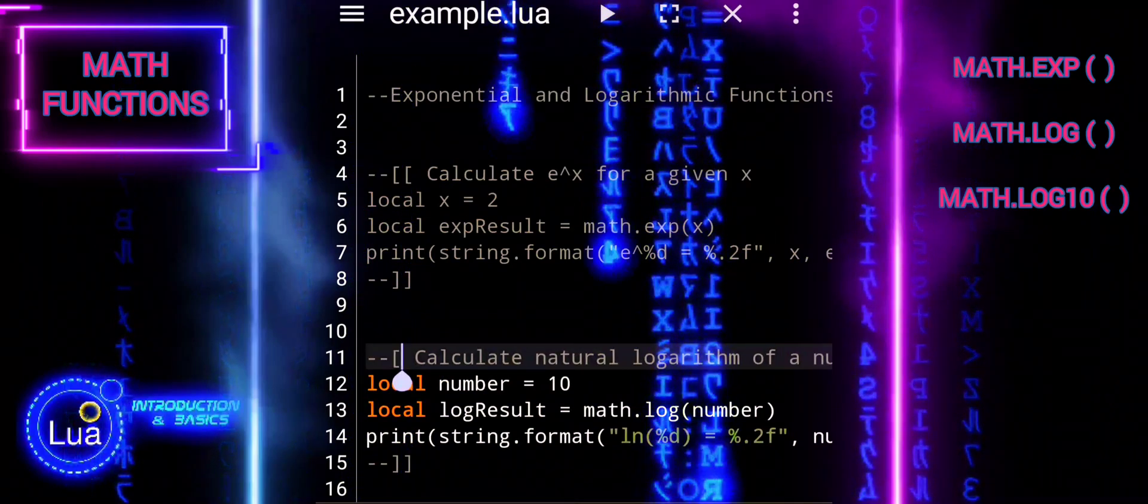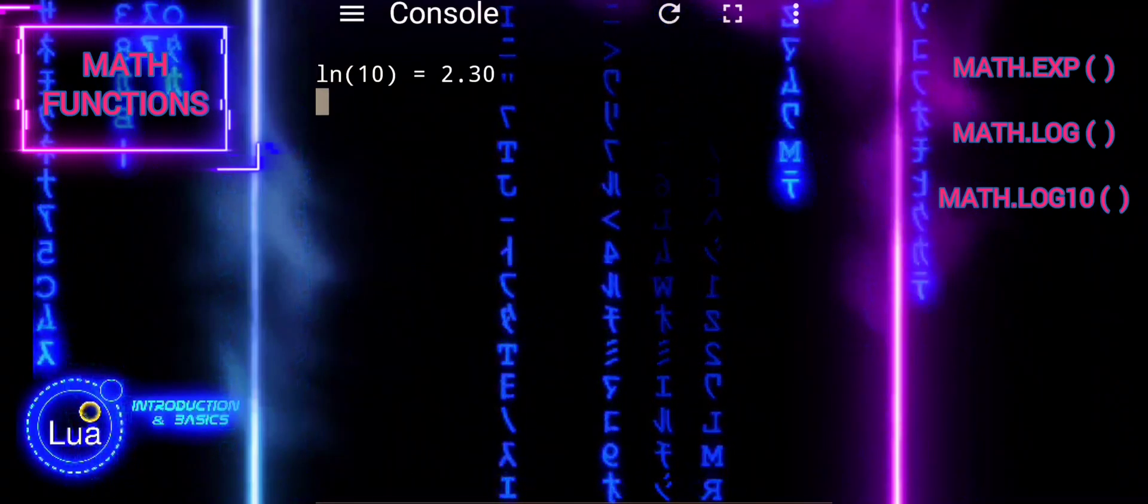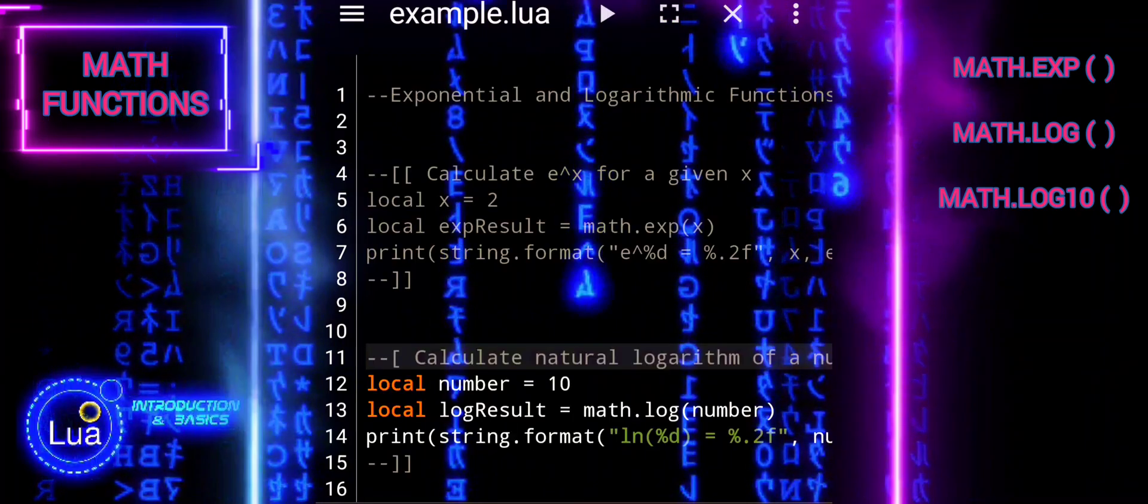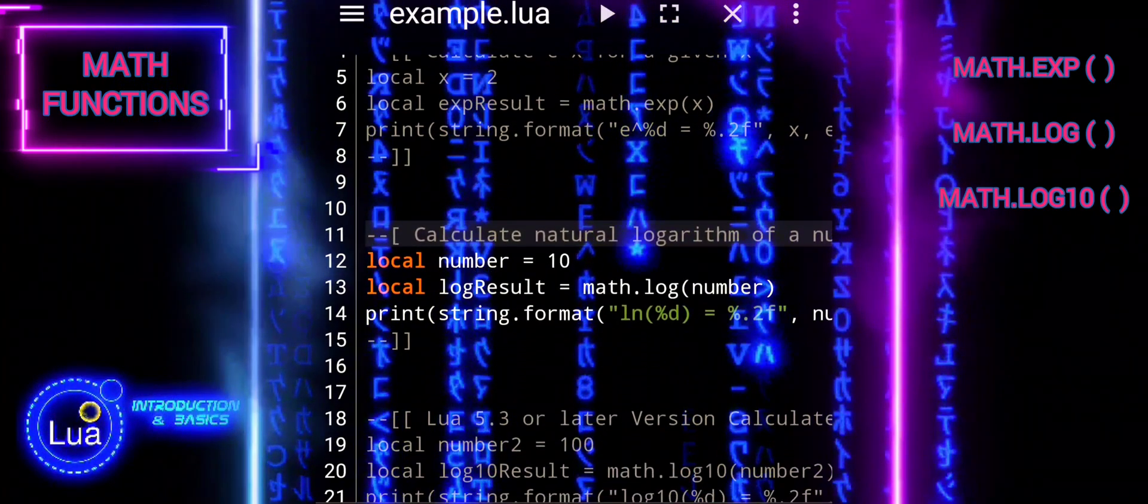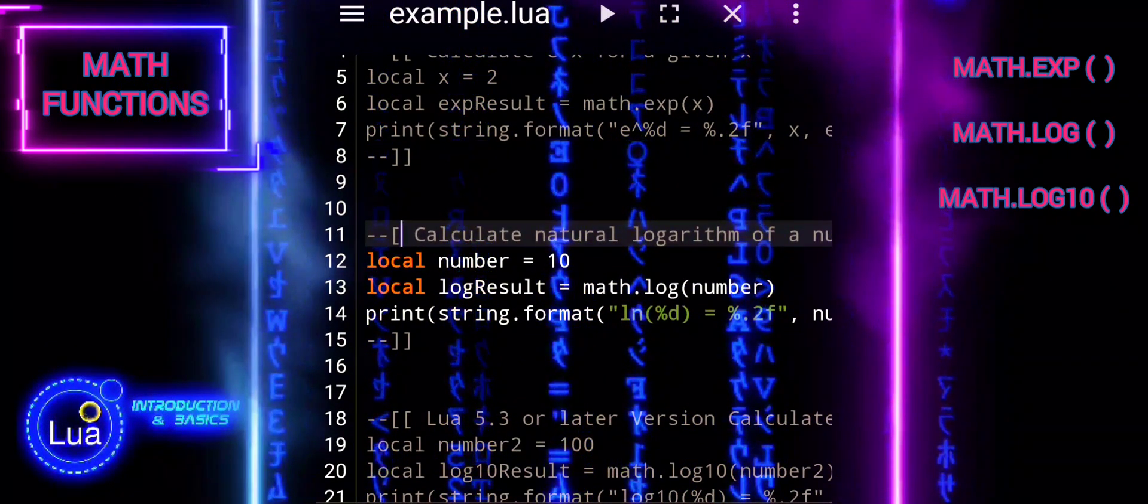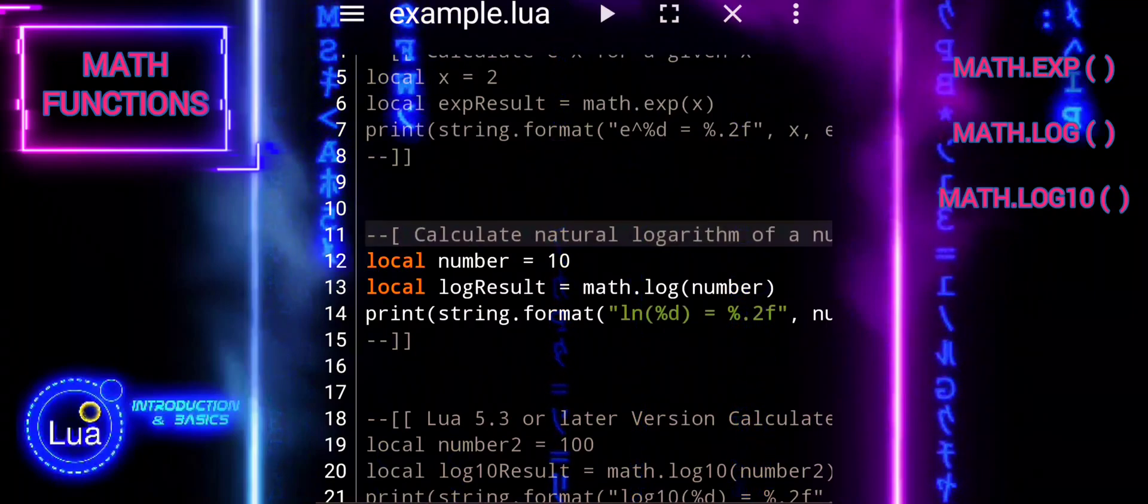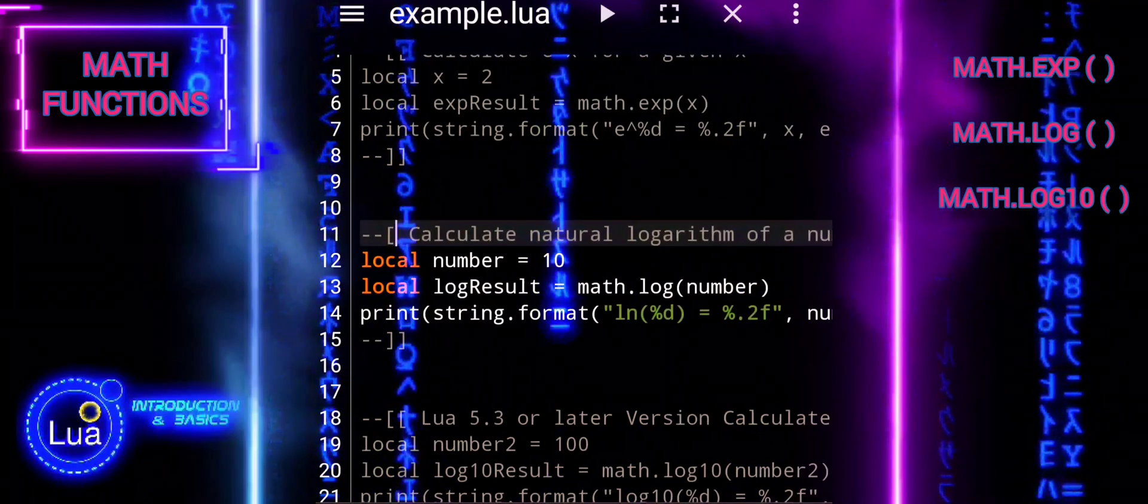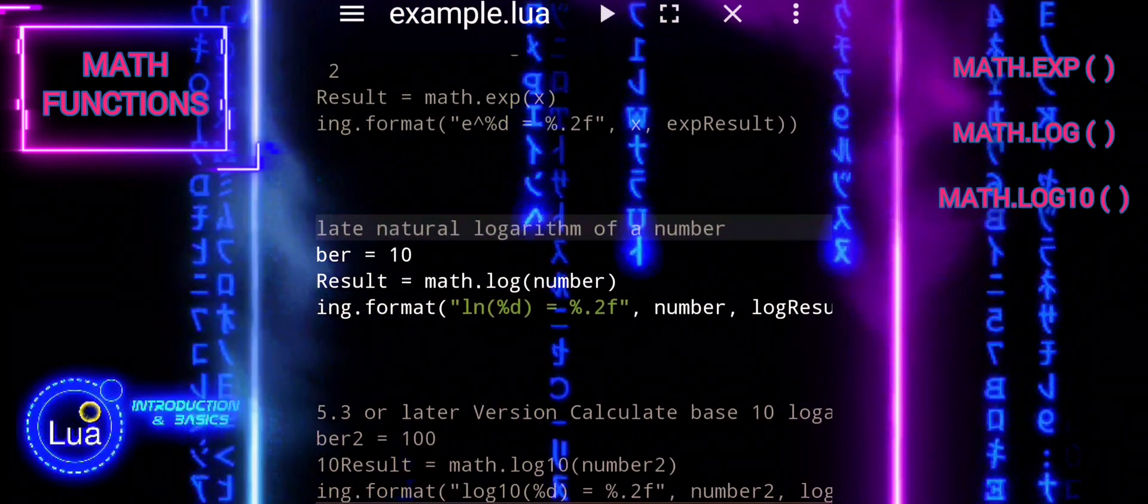The first line declares a local variable number and assigns it the value 10. This represents the number for which we want to calculate the natural logarithm. The second line calculates the natural logarithm of the number using the math.log function.